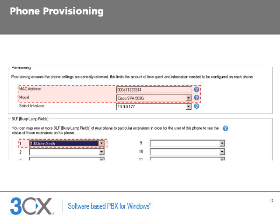In the provisioning tab, we simply need to enter the MAC address of the phone and the model. If we also want to preset the phone to monitor activity for particular extension numbers, we can set this up in the BLF section. Clicking the OK button will generate the provisioning files for the phone to retrieve. The provisioning mechanism will automatically insert the correct parameters for time, timezone and DST settings which we configured previously.